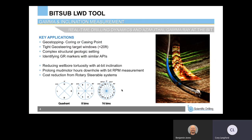Some of the key applications for the bit-sub tool: we're providing real-time drilling dynamics and azimuthal gamma ray at the bit. We can also use these measurements for geo-stopping — say we're looking for a coring or casing point and we do not want to cut too far into the target formation. We can use this at-bit measurement for that application.